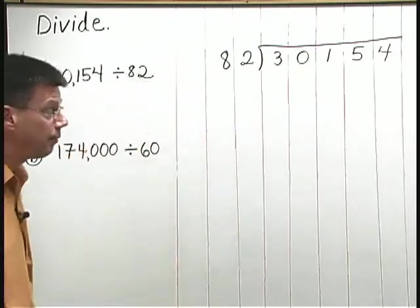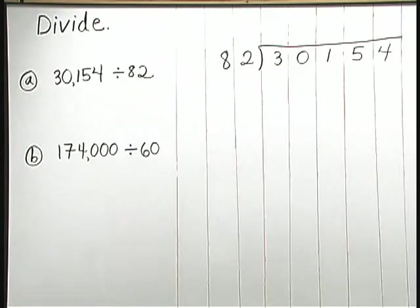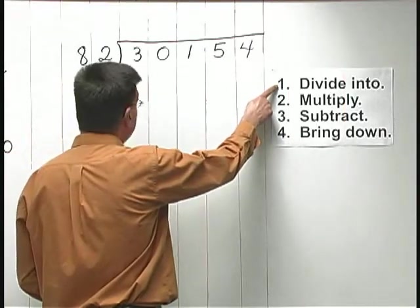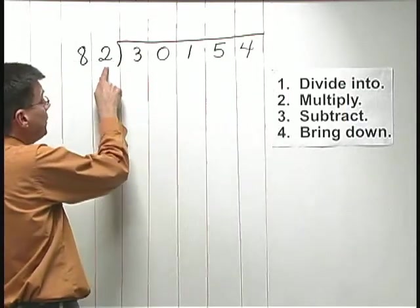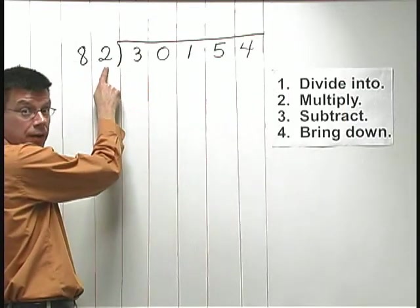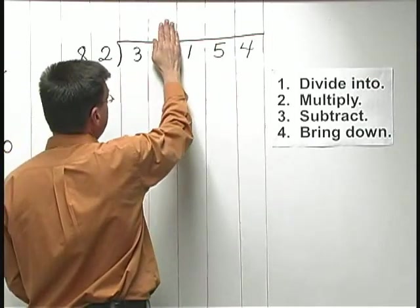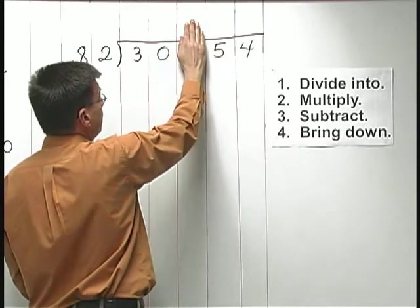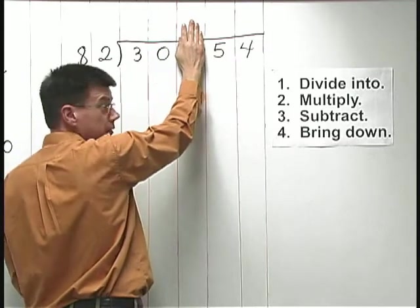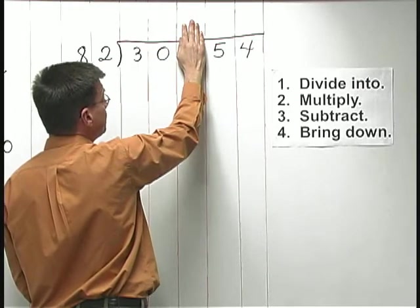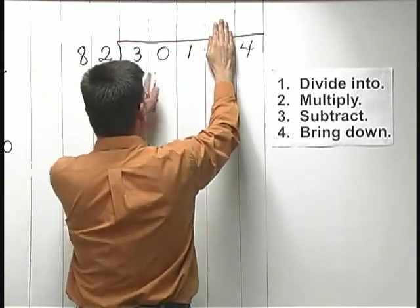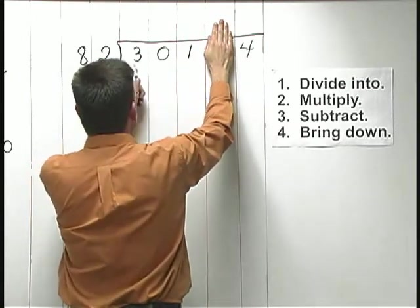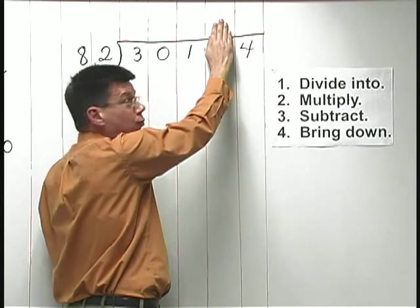Now, let's think about our four steps that we're going to repeat over and over. We need to get started with the divide into step. We want to think about how many times the number in front, the 82, goes into first the first digit, 3. Well, it doesn't even go into 3 once. Then we look at the first two digits, 30. It doesn't go into 30 even once. So, we need to look at the first 3 and think of that as 301.